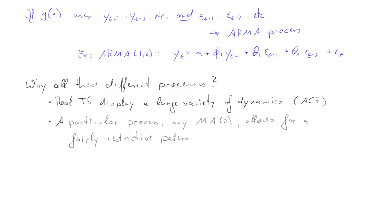Now, if you pick any particular process, let's say an MA2 process, that will allow for a fairly restrictive pattern of the autocorrelation function. We'll learn that when we talk about properties of MA and AR processes. It will be very restrictive.